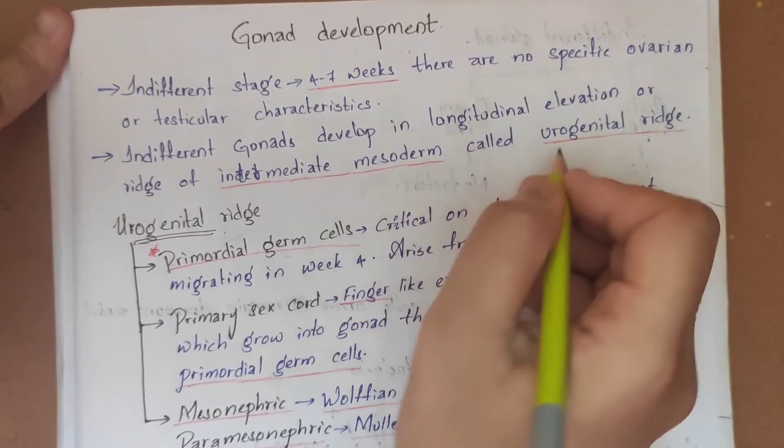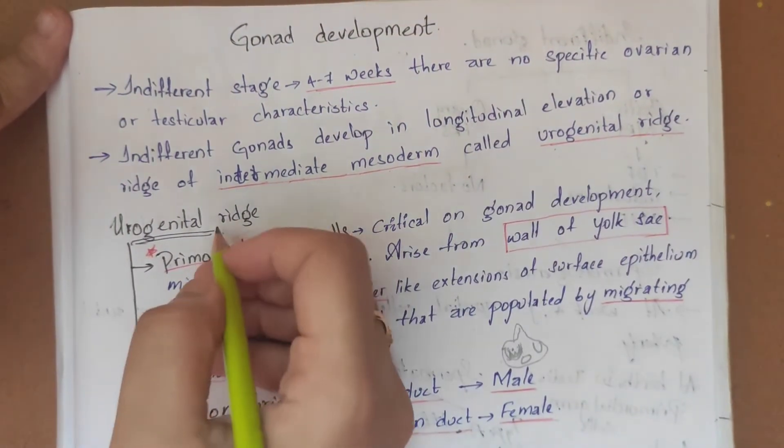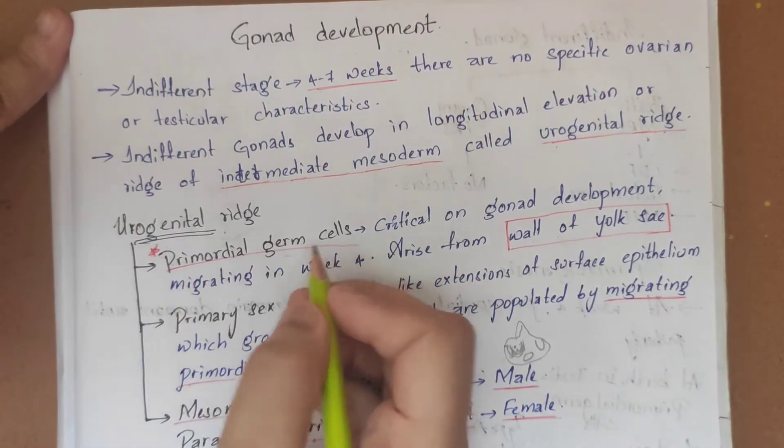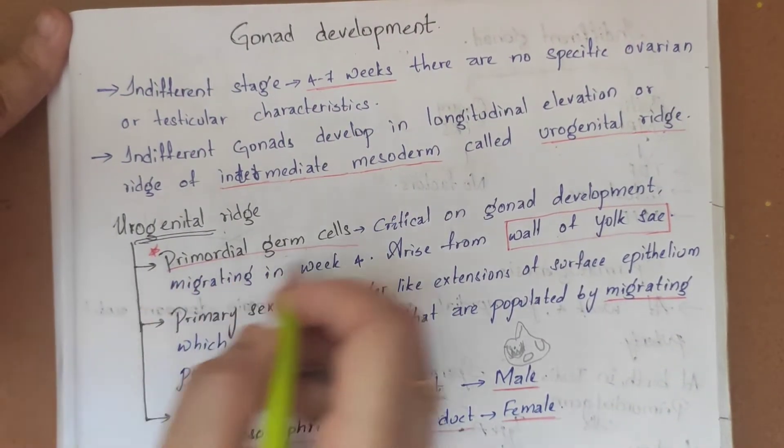This urogenital ridge consists of three components. The first is primordial germ cells, which are very high yield and important for gonad development.